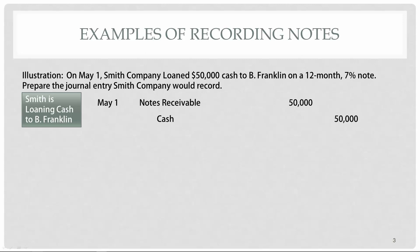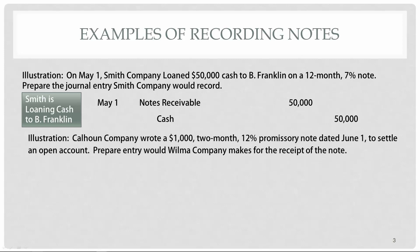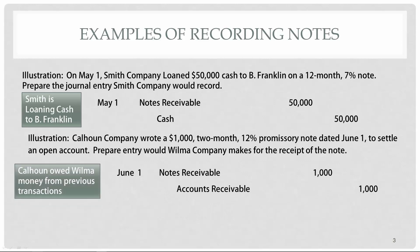Here's another example: Calhoun Company wrote a $1,000, two-month, 12% promissory note on June 1 to settle an open account. That phrase 'to settle an open account' tells us they are using the note to pay off what they owed. So Wilma Company, the lender, is going to debit notes receivable to record the note and decrease accounts receivable to remove that prior receivable balance.